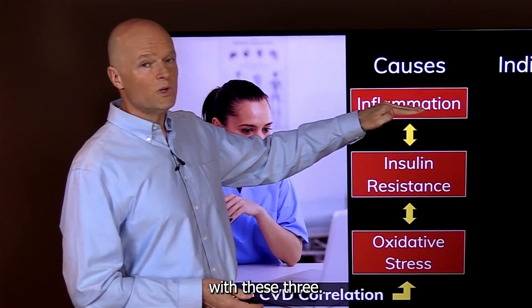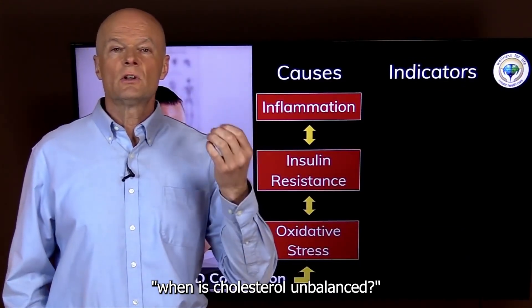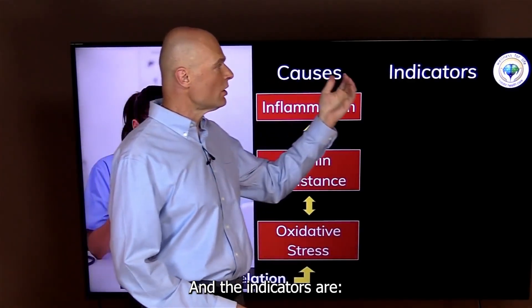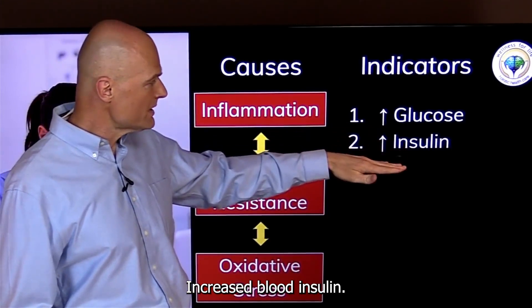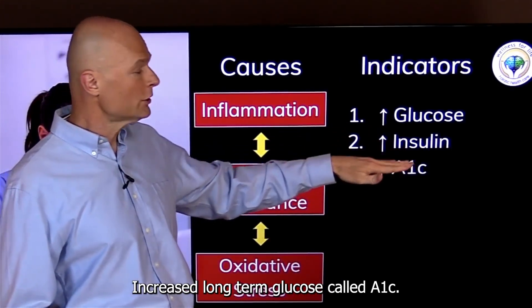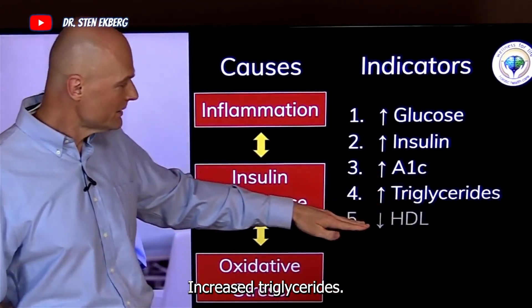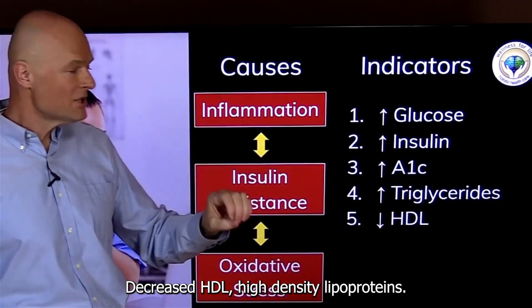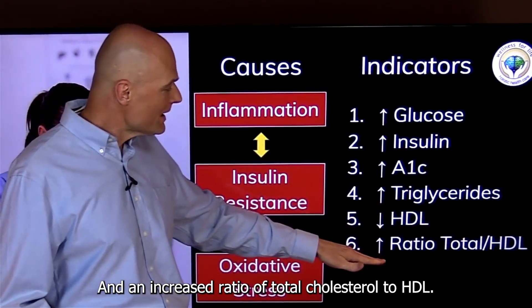associated with these three. So what we really want to understand is: when is cholesterol unbalanced? The indicators are increased blood glucose, increased blood insulin, increased long-term glucose called A1C, increased triglycerides, decreased HDL (high density lipoproteins), and an